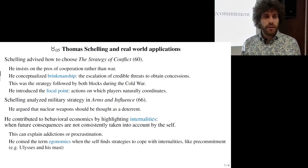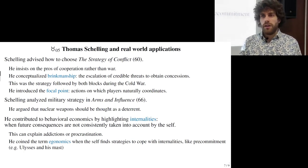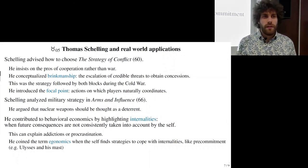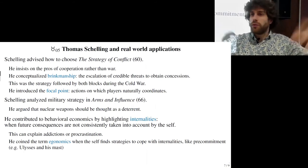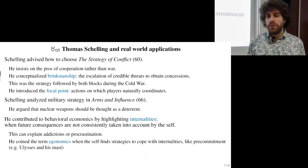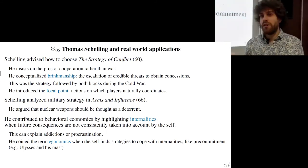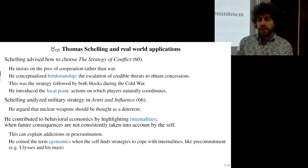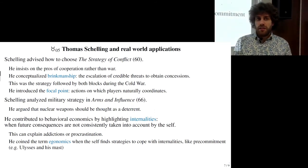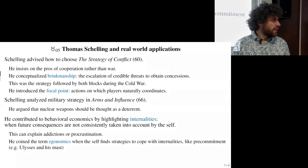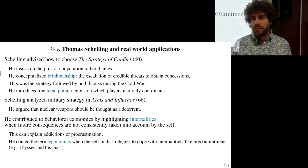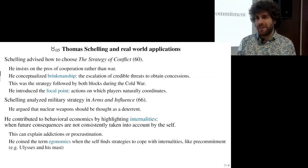He coined the term 'Egonomics' — when the self finds strategies to cope with internalities, like pre-commitment. The good example is Ulysses tied to the mast: to hear the sirens' song without dying, he had himself tied to the mast — a pre-commitment. Another example: unsubscribing from internet one month before an exam so you're sure you won't go on Instagram or Facebook. People make their future self incur a cost to avoid a greater cost, knowing their future self couldn't resist temptation. The technical modeling is through hyperbolic discounting.